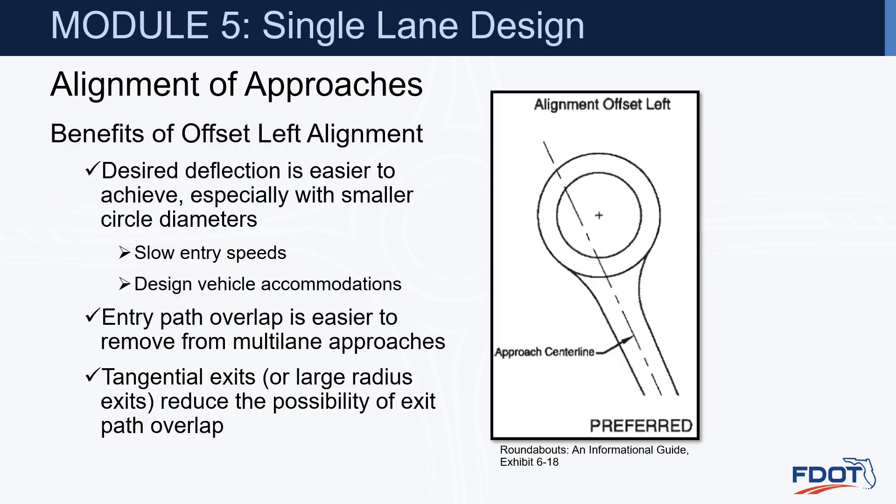There are many benefits of the offset left alignment, including that the desired deflection is easier to achieve, especially with a smaller circle diameter — so we're going to slow down our entry speeds more easily. It's also easier to accommodate the design vehicle. Entry path overlap is easier to remove from multi-lane approaches, and tangential exits reduce the possibility of exit path overlap.